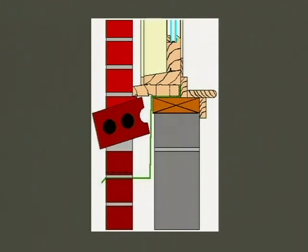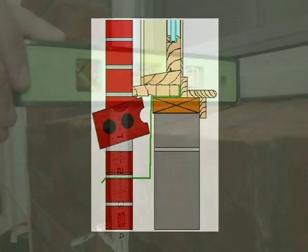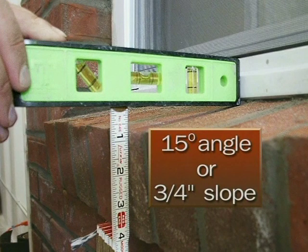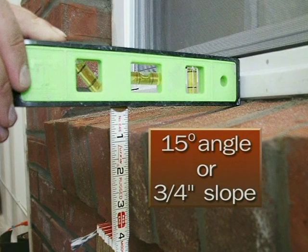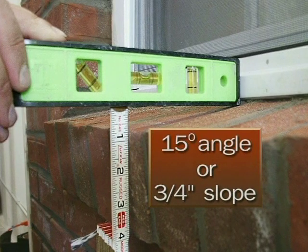Notice too that there is some fall on this sill. It's very important for your mason to make sure that this industry standard is at least closely adhered to. About a 15 degree fall, or about three quarters of an inch, will do the job. That way the water that the window collects and that comes down on the sill is directed off much more quickly.